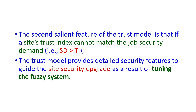A site's trust index cannot match the job security demand when SD is greater than TI. Actually, the trust index TI should be greater than or equal to the security demand SD for the site to be trustworthy. The trust model also provides detailed security features to guide site security upgrade, which is called tuning the fuzzy system.